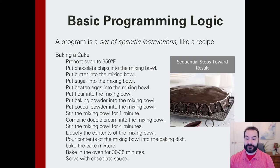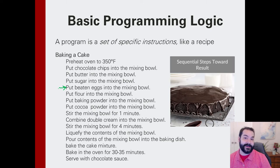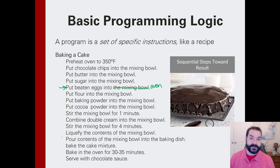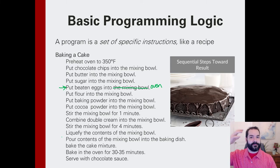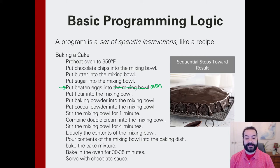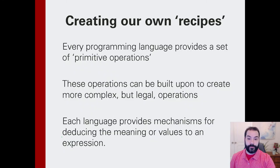Think about baking a cake. There's a step that says put beaten eggs into a mixing bowl. If I skip that step and instead put beaten eggs in the oven, that doesn't make a cake — that makes a frittata or an omelet. I did my steps in the wrong order. So again, this is the idea of making sure we can build our own recipes.